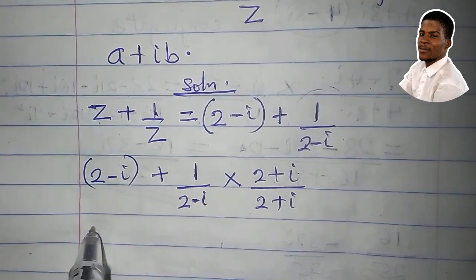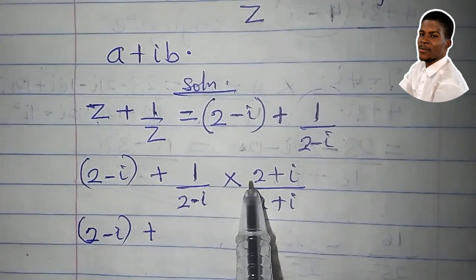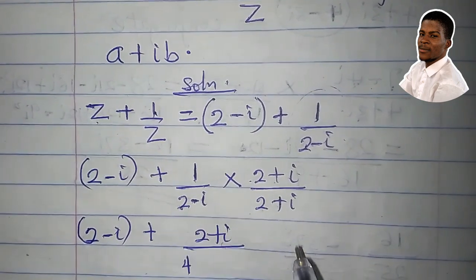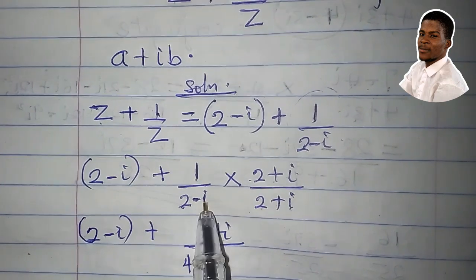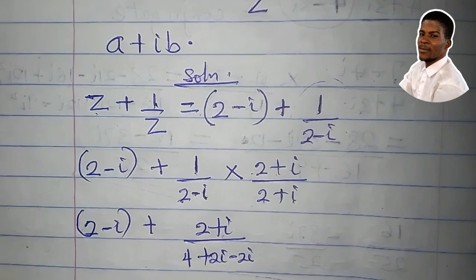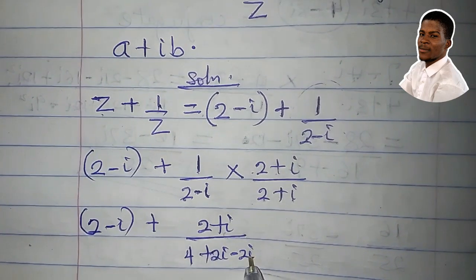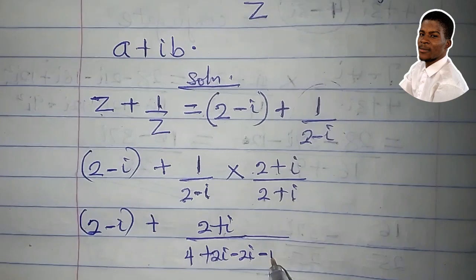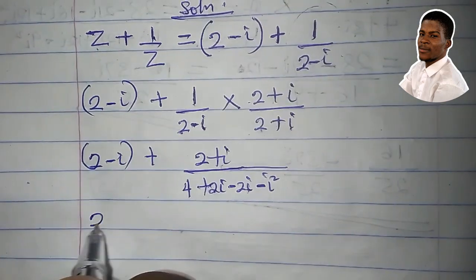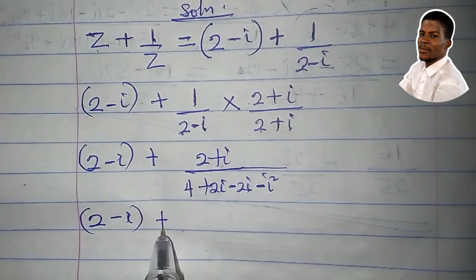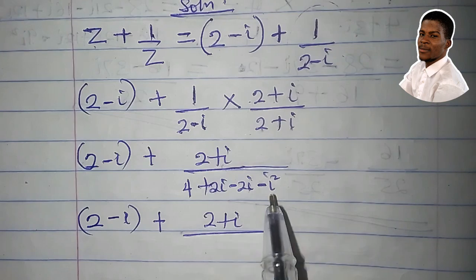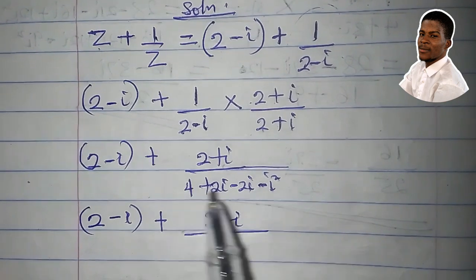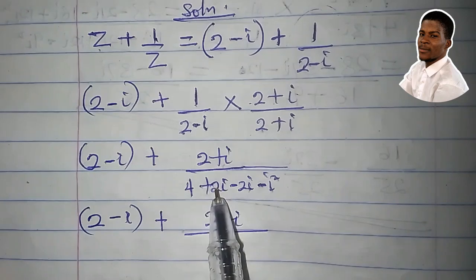So 2 minus i plus 1 times 2 plus i is still 2 plus i. Then 2 times 2 is 4. 2 times i is 2i. Minus i times 2 is minus 2i. Of course, 2i minus 2i is 0. Minus i times i is minus i squared. So we have 2 minus i plus 2 plus i all over... i squared is minus 1. So this minus will affect the minus 1 to give us plus 1. So we have 4 plus 1, which is 5.